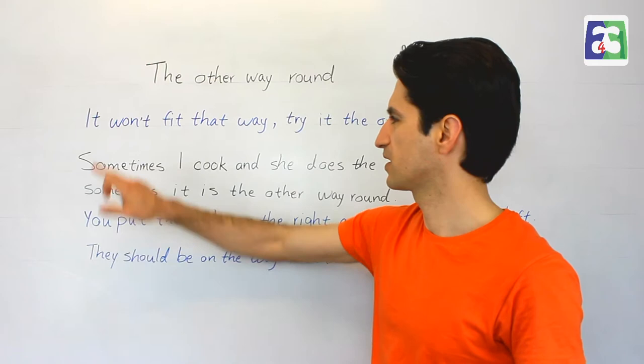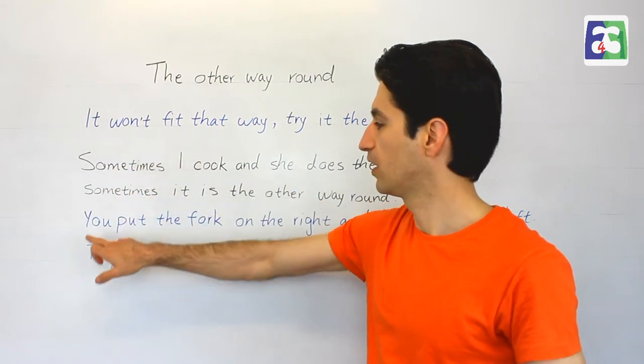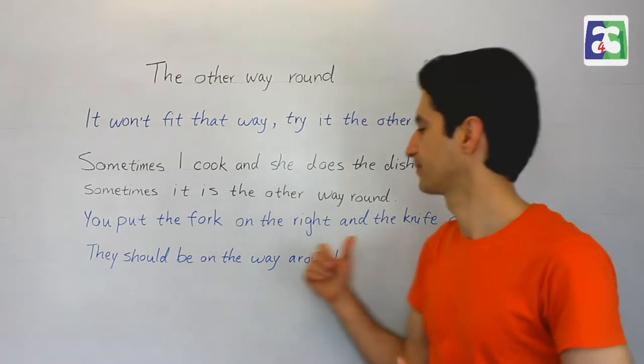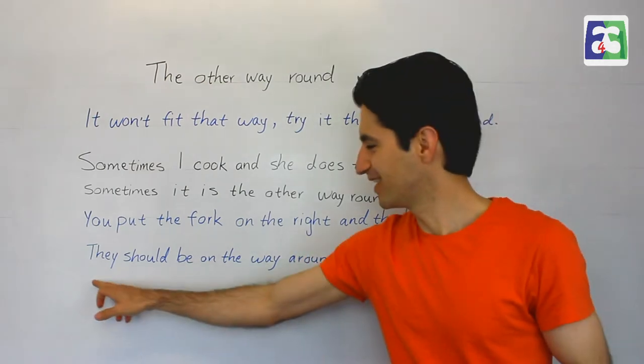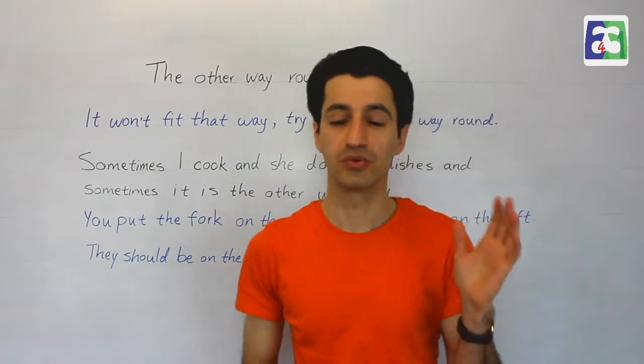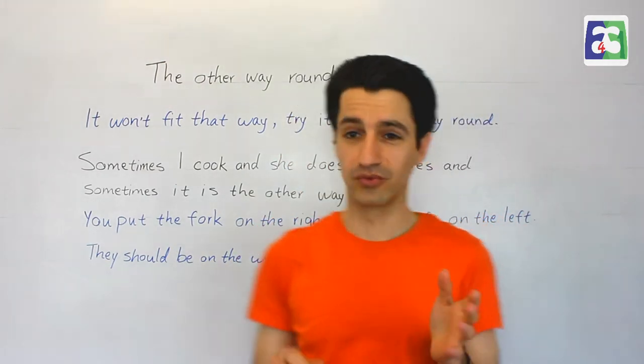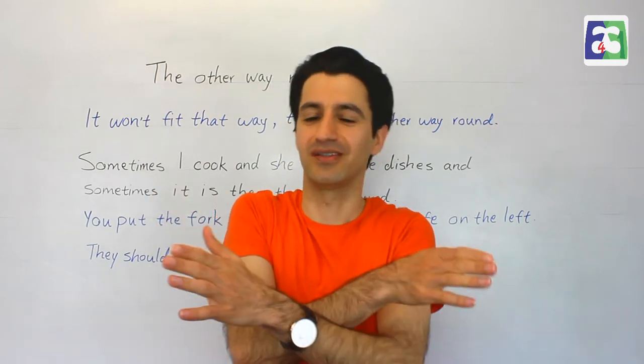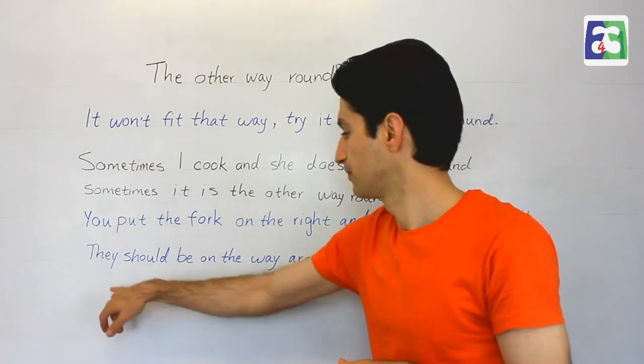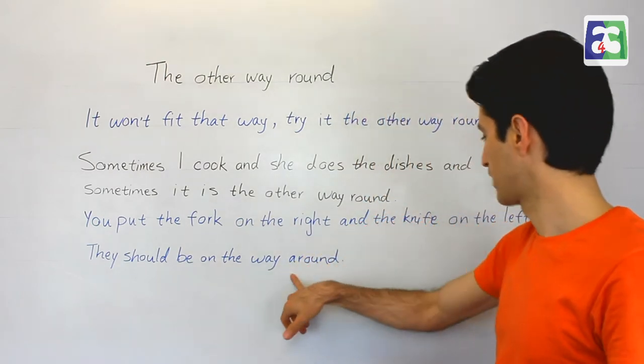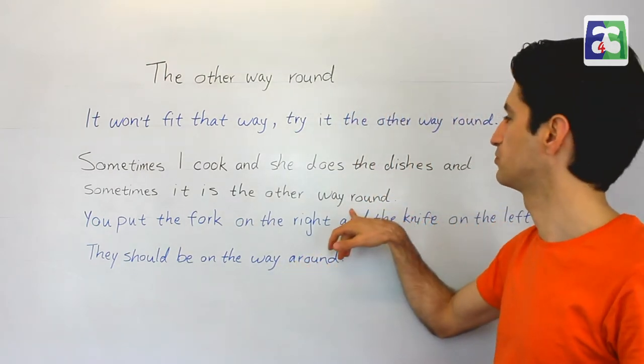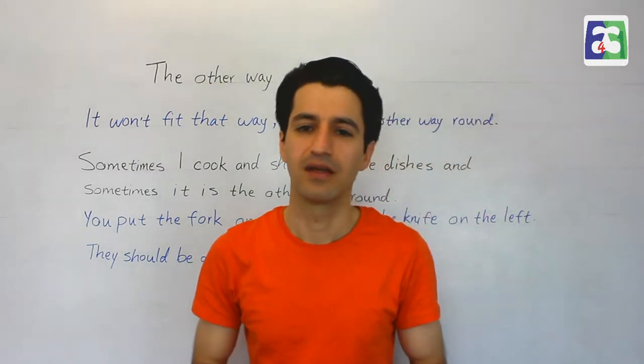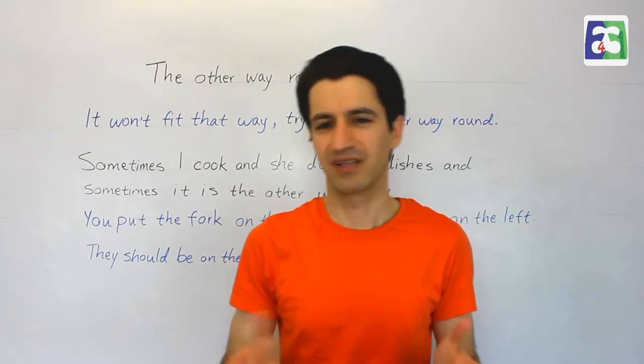And this one is again like the first one. You put the fork on the right and the knife on the left. They should be the other way around. Over here I've used around, here I used round. Round or around doesn't make a difference. They are the same thing.